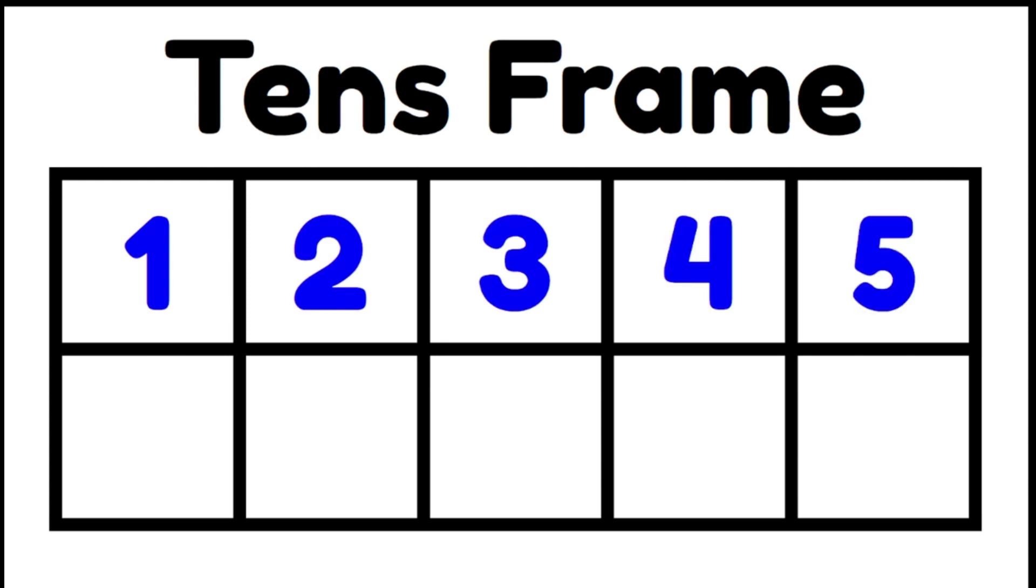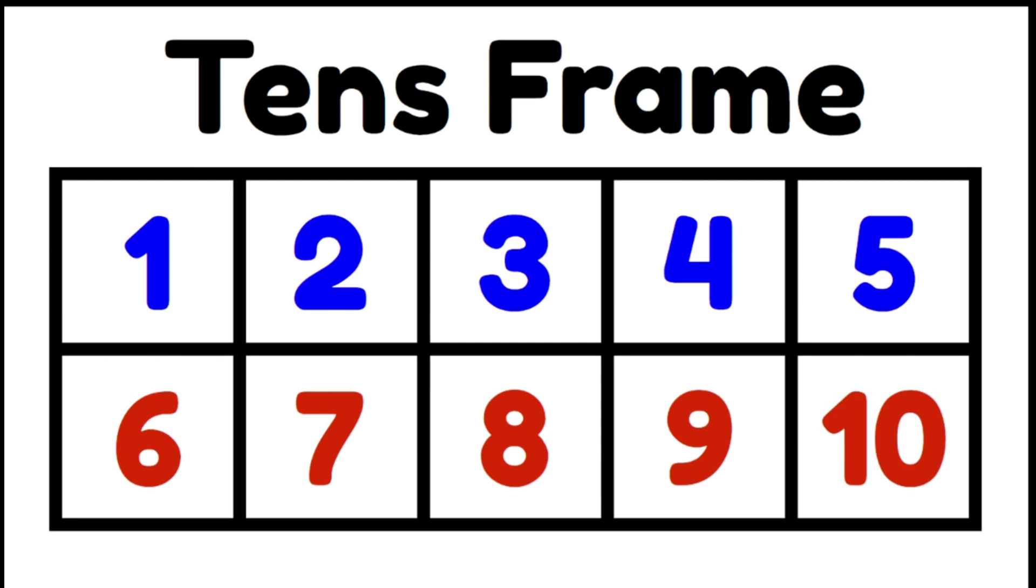1, 2, 3, 4, 5, 6, 7, 8, 9, 10. We have 5 in the top row and 5 in the bottom row which makes 10.